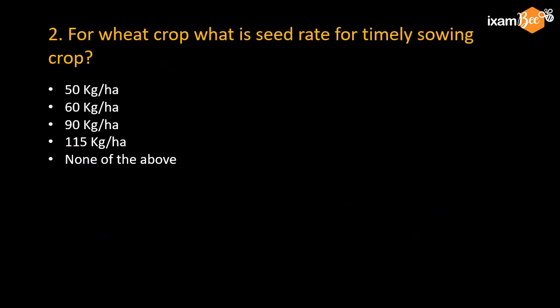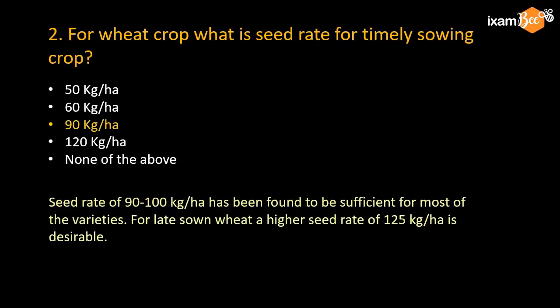Question number 2: for wheat crop, what is the seed rate for timely sowing? If the crop is sown late, you have to increase the seed rate. Seed rate is the quantity of seed sown per hectare for optimum crop yield. For wheat, the answer is 90 kg per hectare — meaning for optimum yield, the best result is achieved by sowing around 90 kg per hectare.